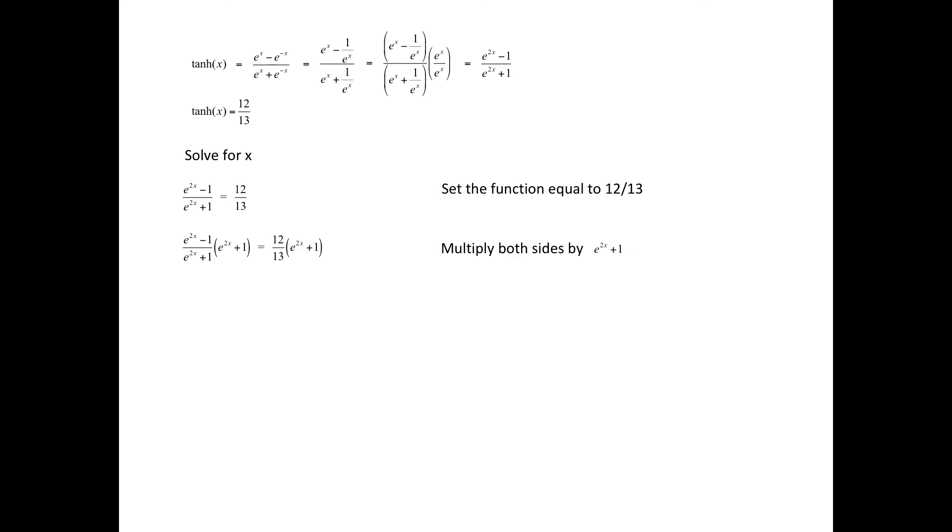Now if we multiply both sides by e to the 2x plus 1, the result would be e to the 2x minus 1 equals 12 13ths e to the 2x plus 12 13ths when we distribute on the right.